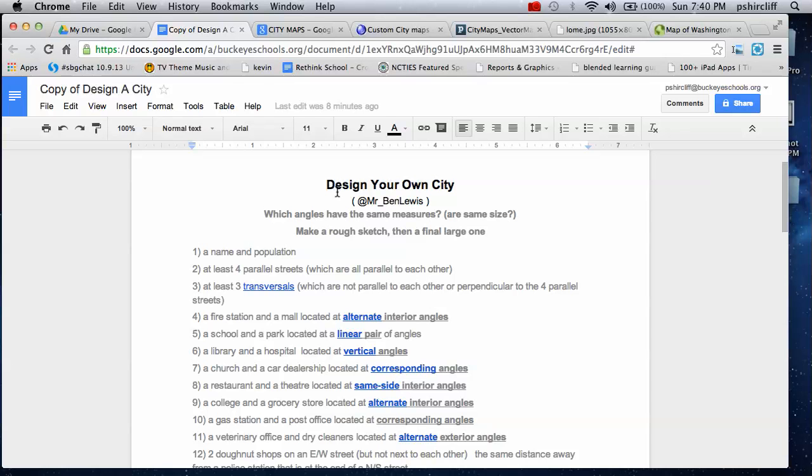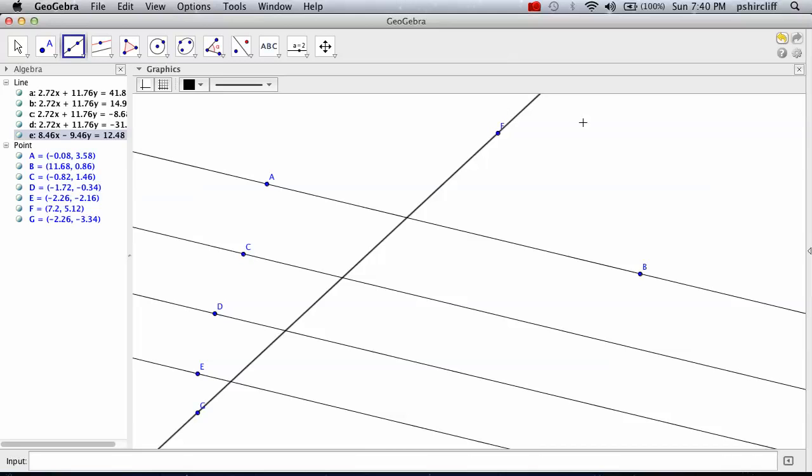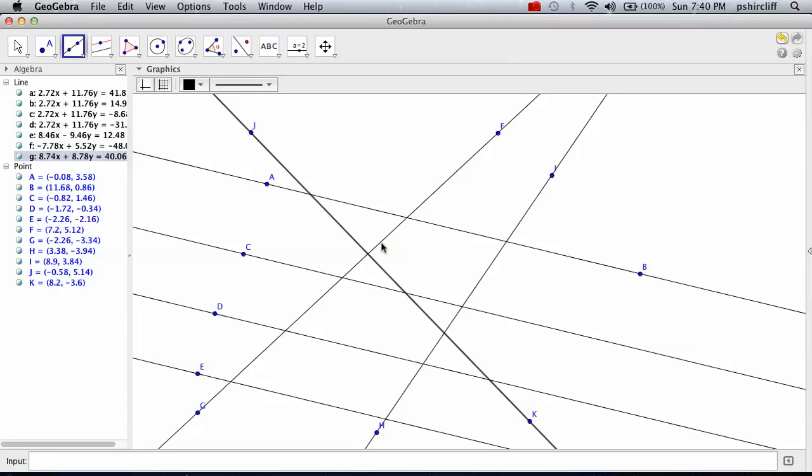So we have to draw some parallels. You've got your basic parallel idea, and then you need some transversals. Transversals is just a name for things that cross it. Now you can put the transversals any way you want, make them cross each other. Also sets up some different things.